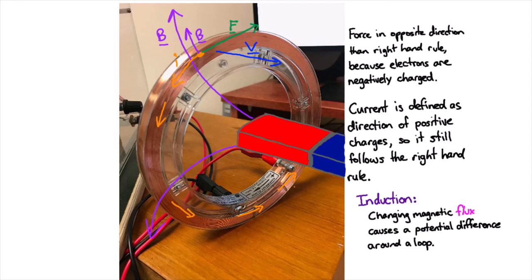And energy per unit charge is an electric potential, so we get a potential difference going around this loop based on the amount of changing magnetic flux we have.